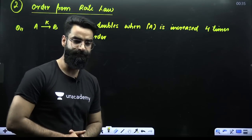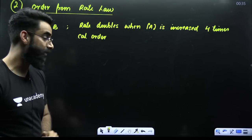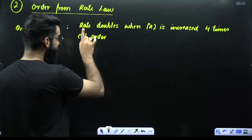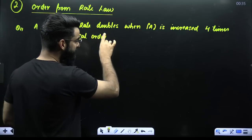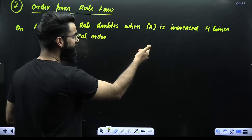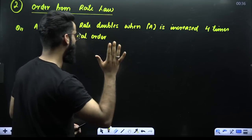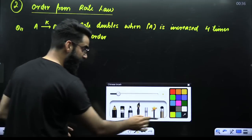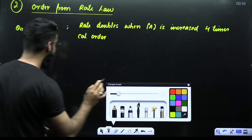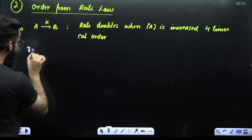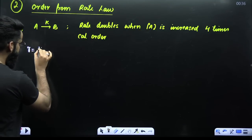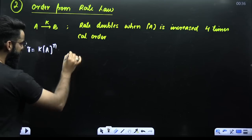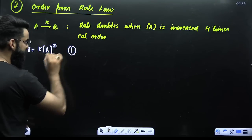Concept number 2: how do we determine order from the rate law? For example, you have a reaction where the rate doubles when the concentration of A is increased four times. To approach this, first write the rate law: R equals K times concentration of reactant raised to power N. Call this equation number 1.